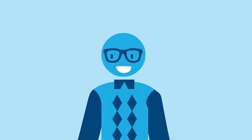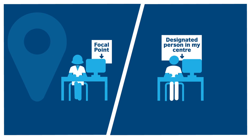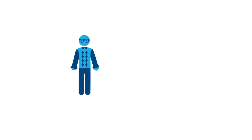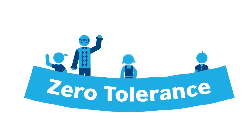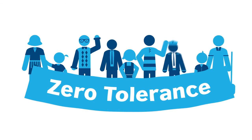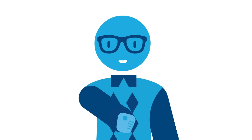What should I do if I suspect that a child or a teenager is at risk? Immediately report the situation to my child protection focal point or to the designated person in my centre. Child protection is everyone's responsibility. I'm already committed to zero tolerance against child abuse.